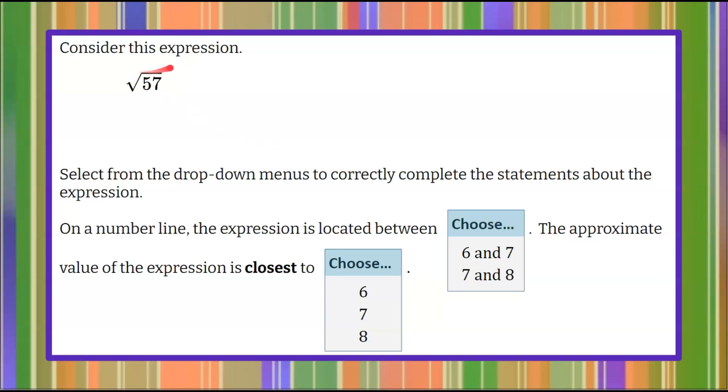Here's our question today. We're asked to consider this expression, the square root of 57. Then we're asked to select from the drop-down menus to correctly complete the statements about the expression. First, on a number line, the expression is located between, choose 6 and 7, or between 7 and 8.